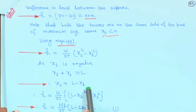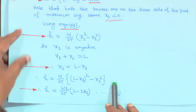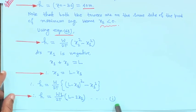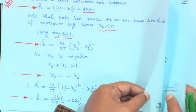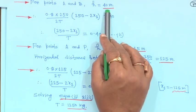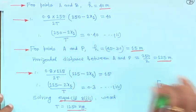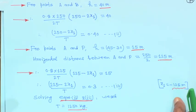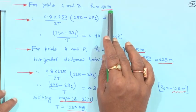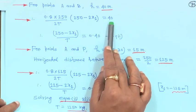That means x2 is equal to L minus x1. Substituting x2 equals L minus x1 and simplifying, H will be W·L divided by 2T into (L minus 2·x1). This is equation 1. For points A and B, the difference H is equal to 40 meter, because point B is at 70 meter height and point A is at 30 meter from the water level. Substituting all values: 0.8 into 250 upon 2T into (250 minus 2·x1) is equal to 40.